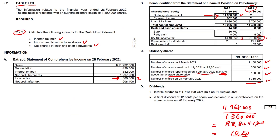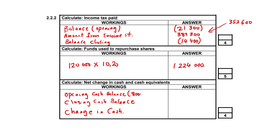Moving on to net changes in cash and cash equivalents — we need to look at bank, petty cash, and bank overdrafts if any. We start with last year: no money in the bank, a 133,000 overdraft, and 8,000 in petty cash. So the opening cash balance is 8,000 in petty cash minus 133,000 overdraft, arriving at negative 125,000 rands.